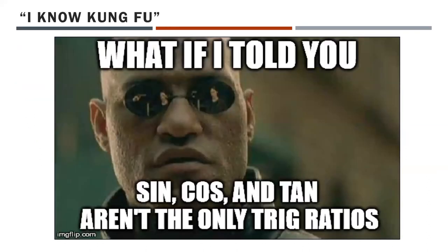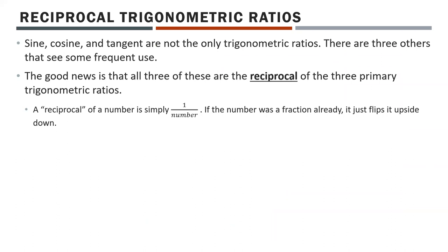What if sine, cosine, and tangent are not the only trig ratios? There are actually three others — the reciprocal trigonometric ratios. All three are simply the reciprocal (the flipped upside-down version) of the three primary trig ratios. A reciprocal of a number is just 1 over that number. If it was a fraction like 4/5, it becomes 5/4 — you just flip it.